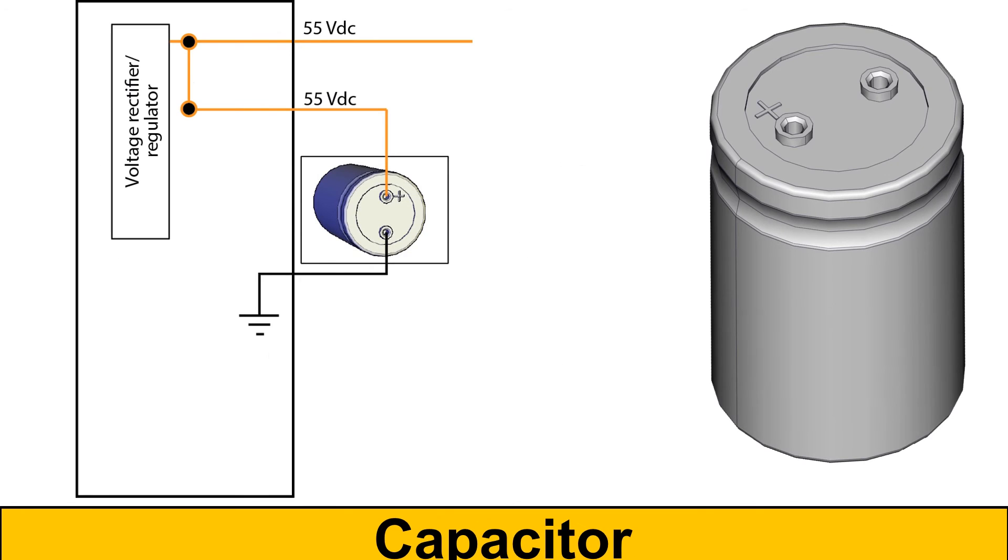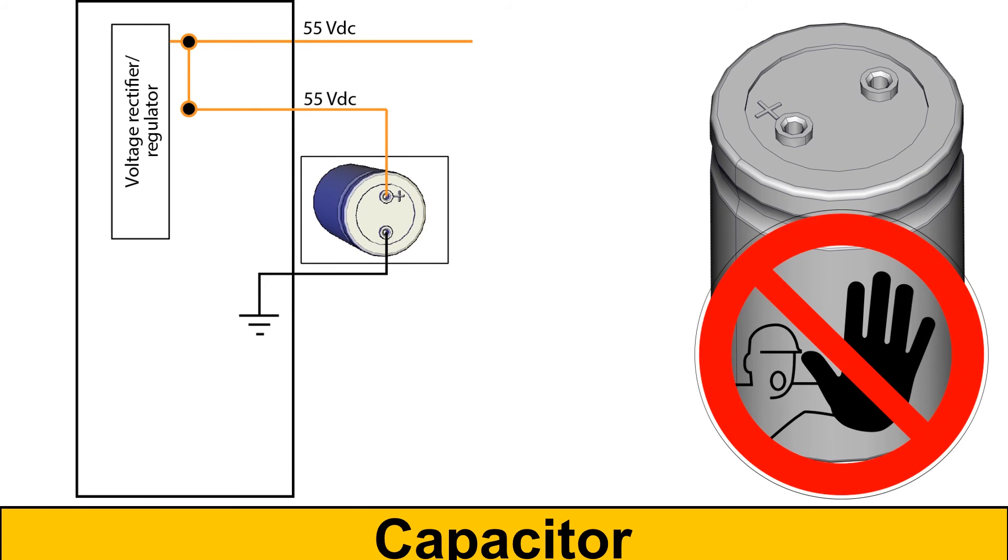The capacitor acts as a temporary reserve of DC power. Capacitors are sealed and cannot be serviced. The capacitor ensures there is enough power stored for the demands of the high voltage components. It is connected in parallel with the 55 volt circuit to smooth out the ripples in the magneto output current. The capacitor drains through the DC to DC converter in about a minute. However, be careful, it is charged by the battery when connected to BUDS.